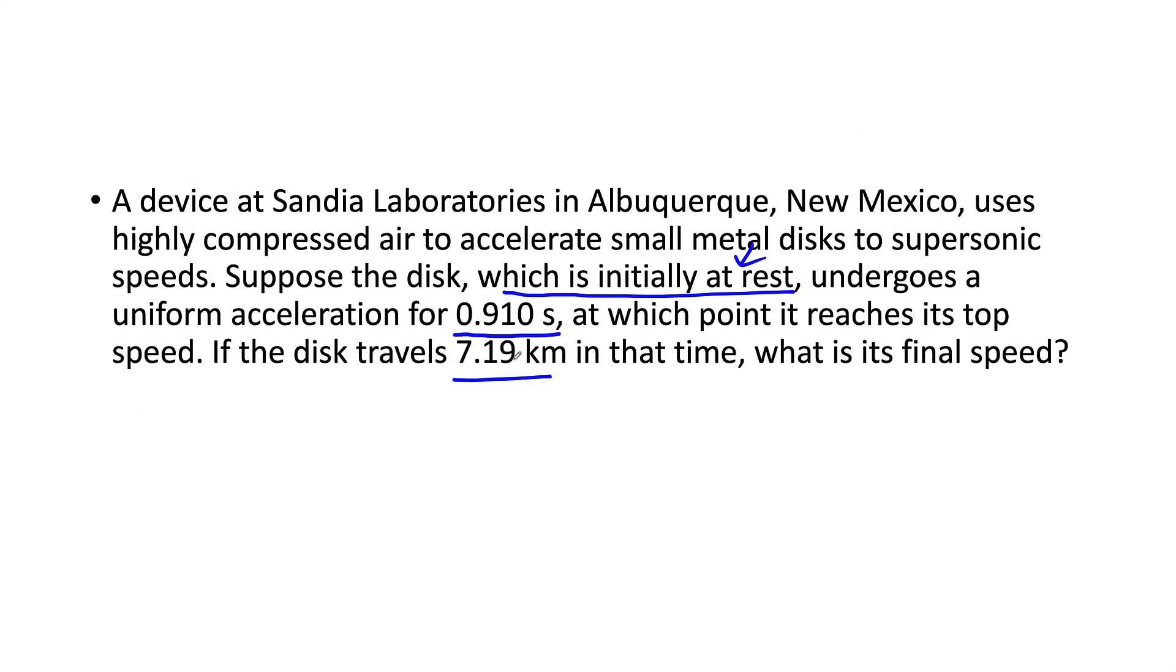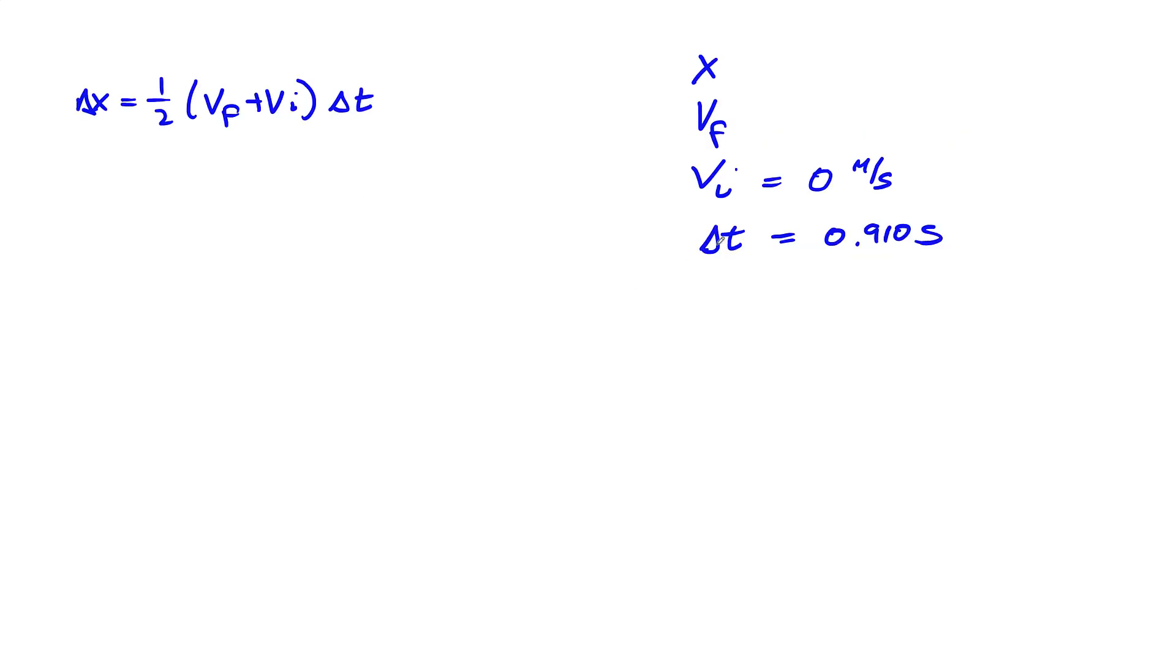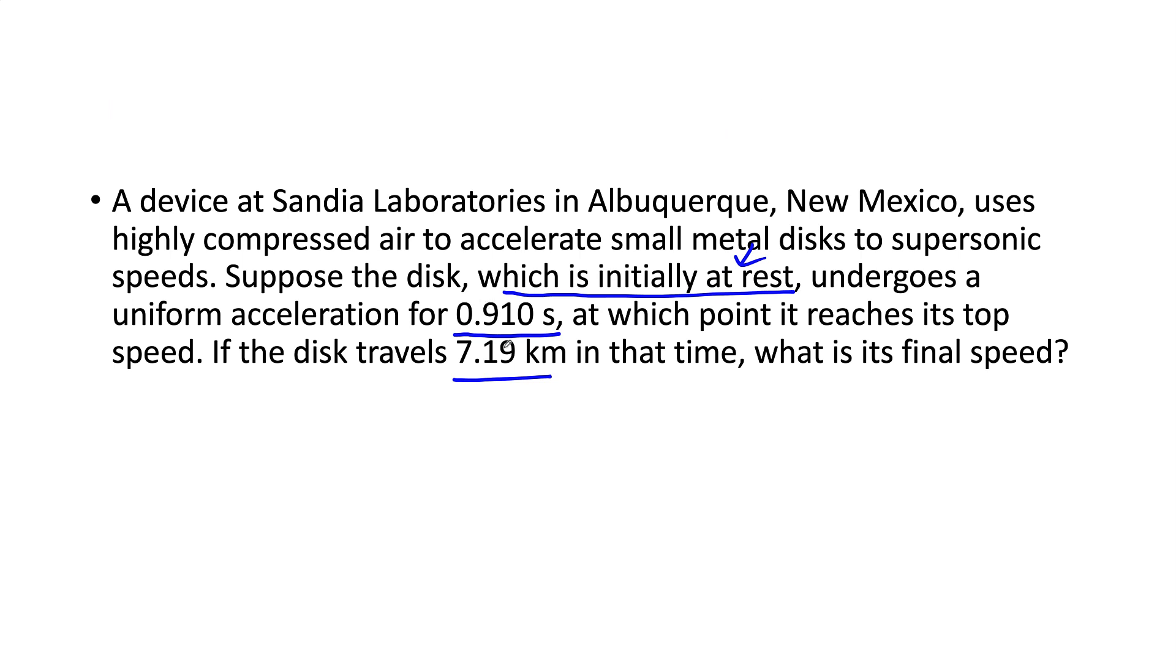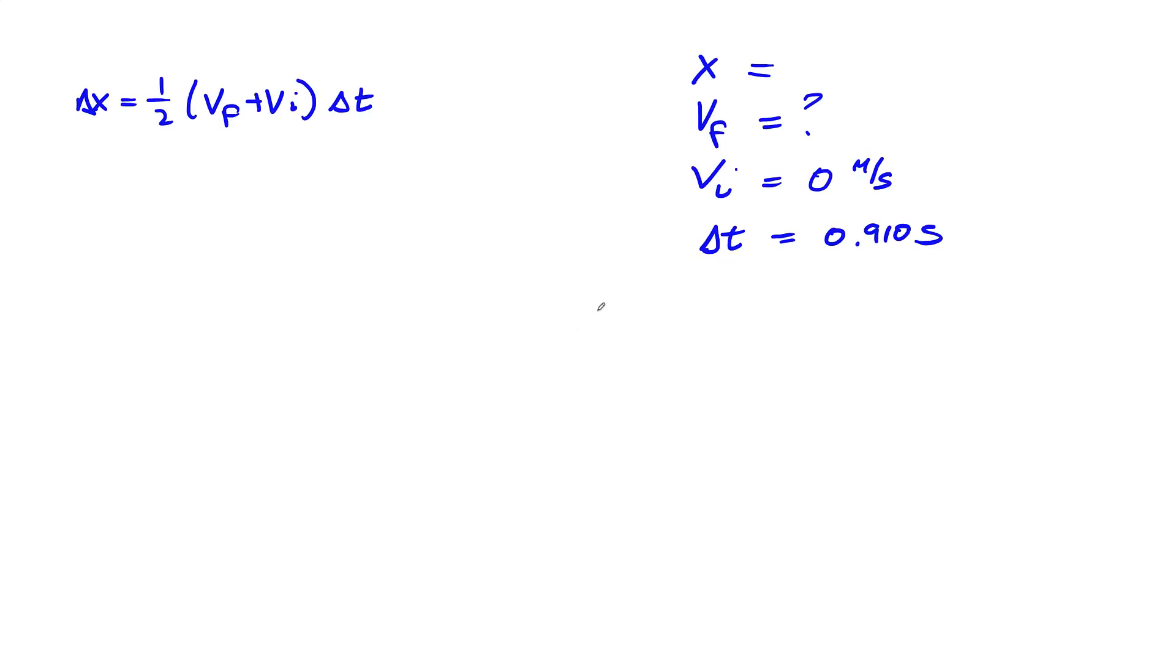Our final velocity we don't know, so that's what we're looking for. What is x? 7.19 kilometers. This is our displacement, 7.19 kilometers.